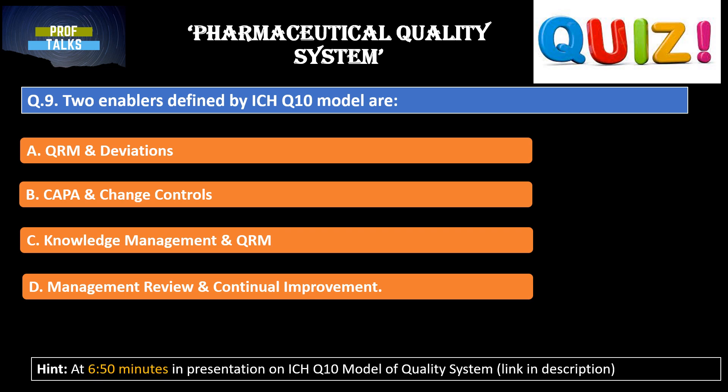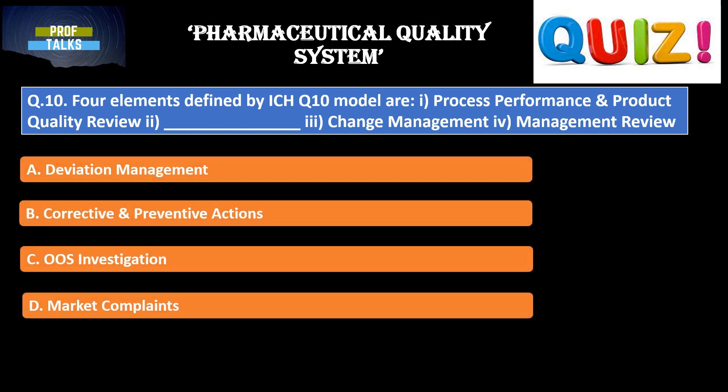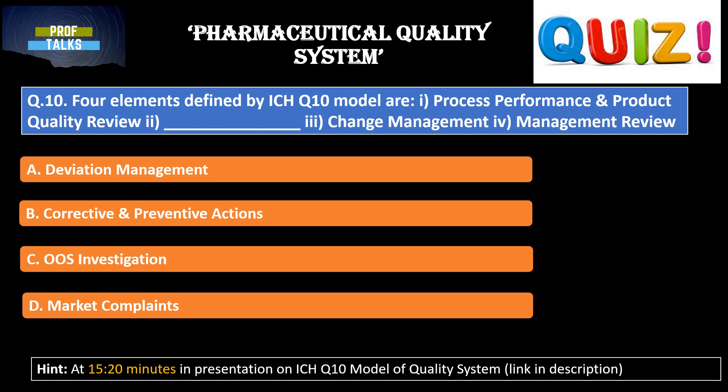Last question: four elements defined by the ICH Q10 model are — first is process performance and product quality review; the second is a fill-in-the-blank; third is change management; and fourth is management review. Options for finding the second element are: deviation management; corrective and preventive action; OOS investigation; and market complaints. You can find the answer at around 15.20 minutes in the ICH Q10 presentation.